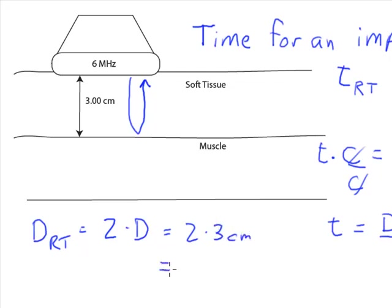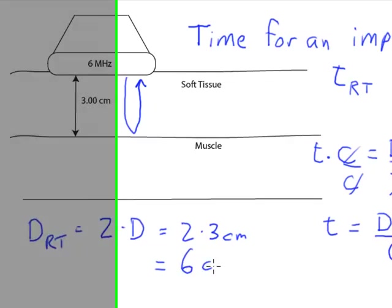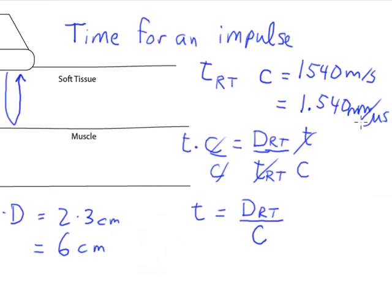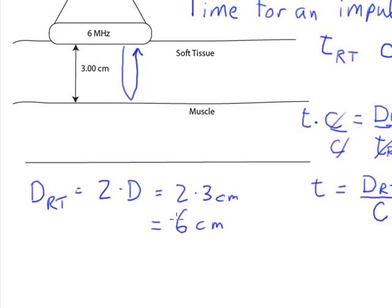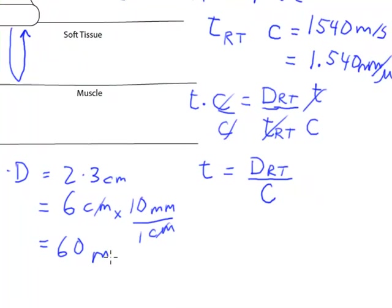Now since my formula here is in millimeters, it might be nice to convert my distance to millimeters. I know that there's 10 mm in 1 cm, and so I can easily convert that to be 60 mm.